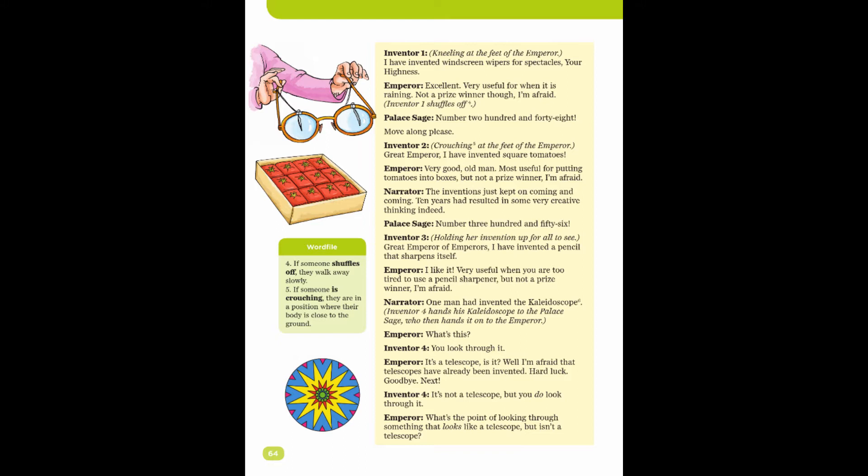Inventor Two, crouching at the feet of the emperor: Great emperor, I have invented square tomatoes. Emperor: Very good, old man. Most useful for putting tomatoes into boxes, but not a prize winner, I am afraid.